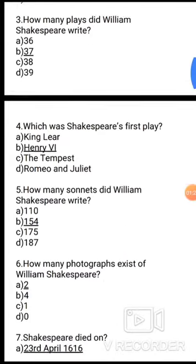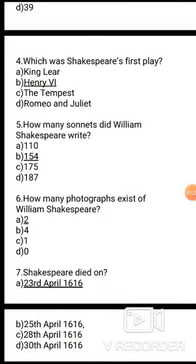Question 6: How many photographs exist of William Shakespeare? Options: A. 2, B. 4, C. 1, D. 0. The correct answer is D — there is no photograph of William Shakespeare.